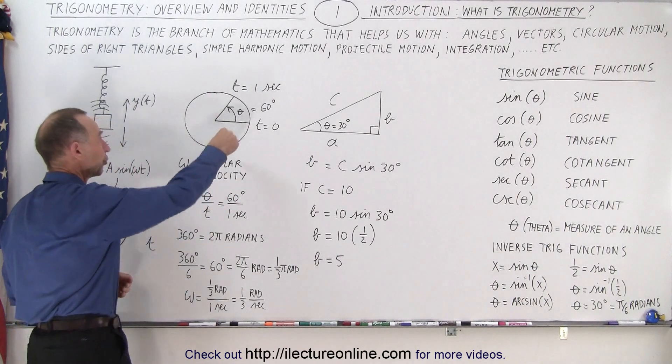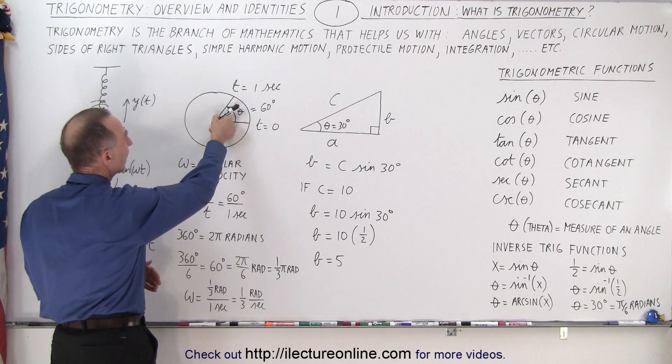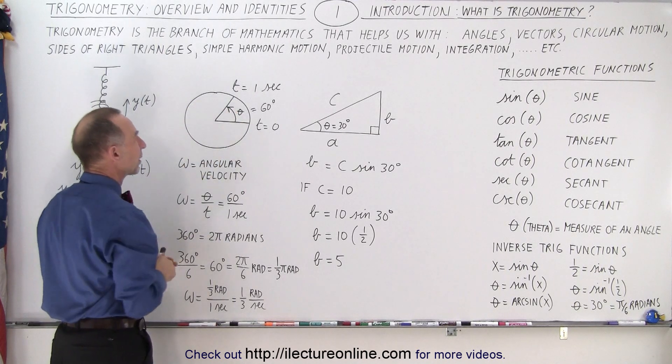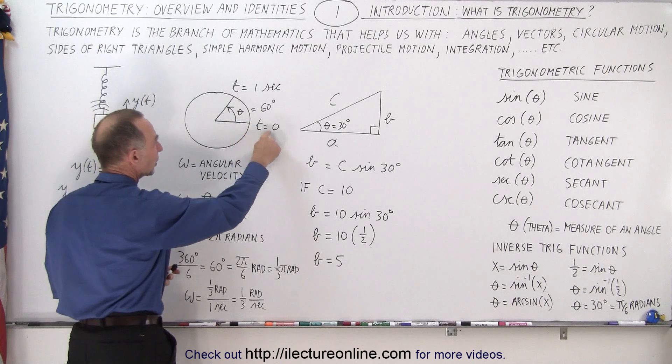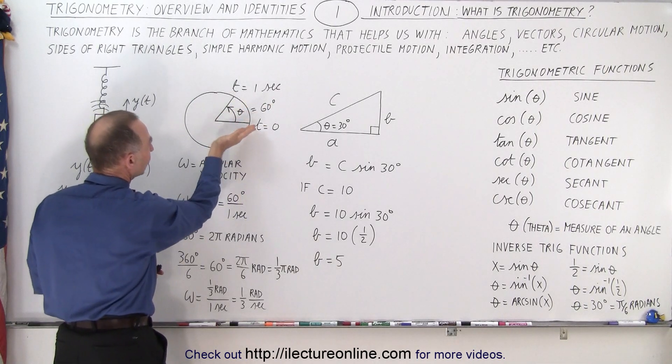We can also use it for circular motion. For example, we go around in circles. That means we go through a certain angle over a certain amount of time. Let's say we were here at time equals zero, here at time equals one second.